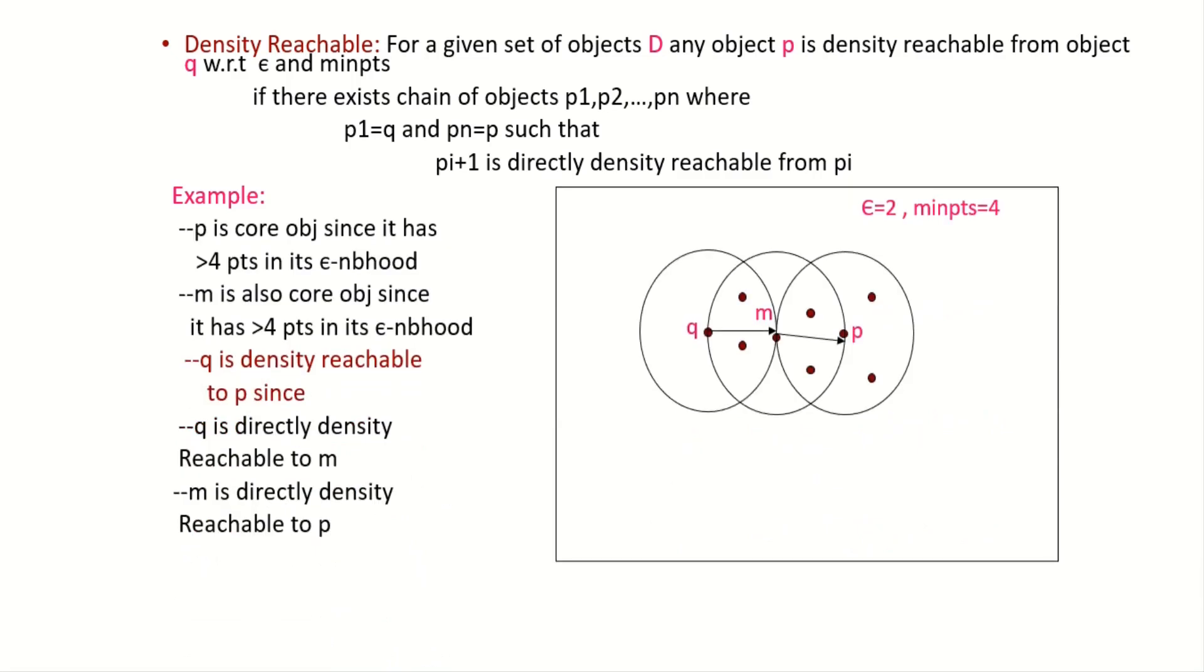P is a core object since it has greater than 4 points in its epsilon-neighborhood. Similarly, M is also a core object, and Q is density reachable to P since Q is directly density reachable to M and M is directly density reachable to P. It's just a clear case of reflexive and transitive property. If X tends to Y then Y tends to X, this is the reflexive property, meaning if Q is directly reachable to M, then M is also directly reachable to Q. Similarly, it follows transitive property: Q tends to M, M tends to P, then Q tends to P, meaning Q is density reachable to P because M is acting as directly reachable between both of them.